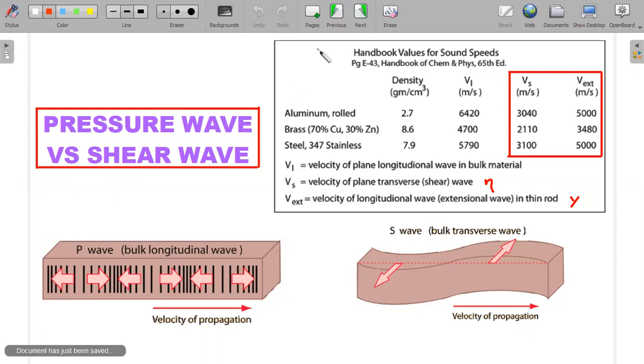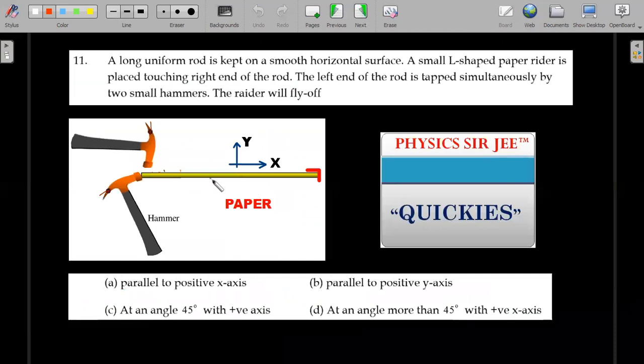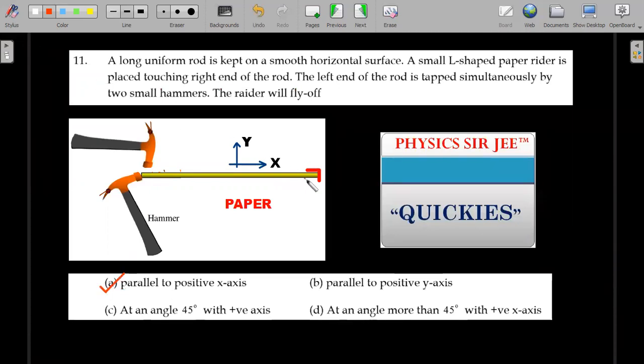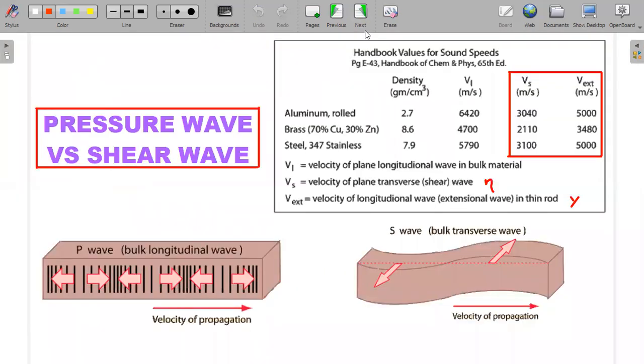The wave that is traveling towards right and back and forth in longitudinal manner reaches this position first as compared to the wave which is traveling in a shear manner. So this paper rider will experience that P wave first and therefore move towards the x direction. So the most appropriate answer here would be option A. By the time the shear wave reaches, the rider would have lost contact and therefore you will not end up getting C or D. That's the whole idea.